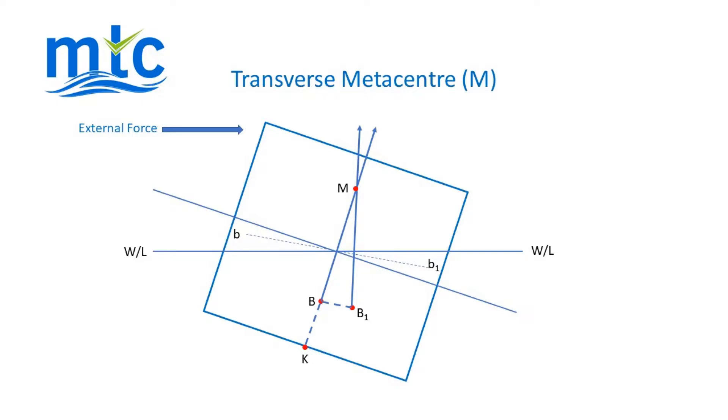The metacentre is where big B1 acting upwards intersects the centre line.